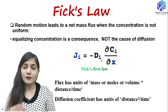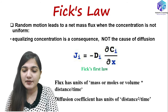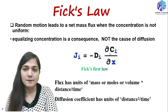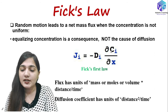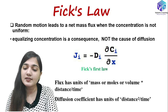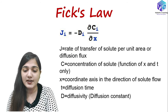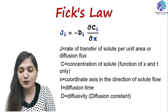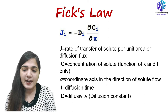Why do we have the negative sign? The concentration changes from higher to lower concentration. The flux direction is also from higher to lower concentration, and since the concentration gradient del-C by del-x is negative in this direction, we have the negative sign to make J positive. J is the rate of transfer of solute per unit area per unit time — it is called the diffusion flux. C is the concentration of the solute, x is the coordinate axis in the direction of solute flow, t is the diffusion time.